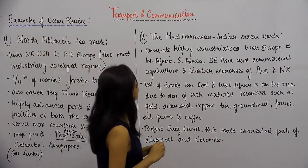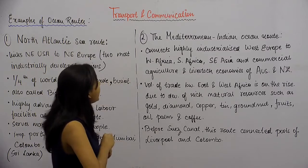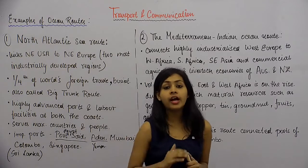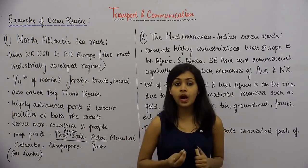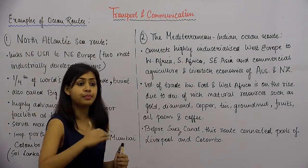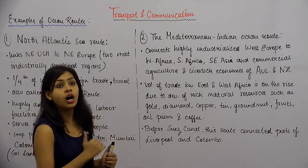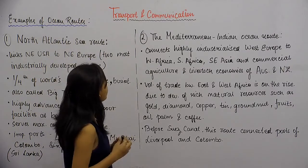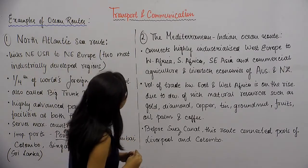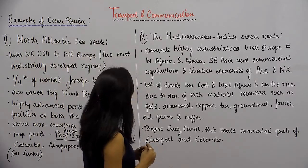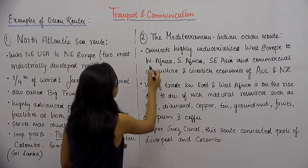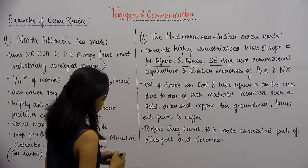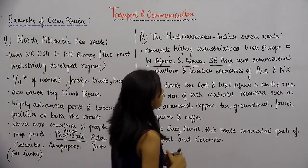Next, we look at the Mediterranean Indian Ocean route. This route connects highly industrialized West Europe to West Africa, South Africa, Southeast Asia, and the commercial agriculture and livestock economies of Australia and New Zealand.